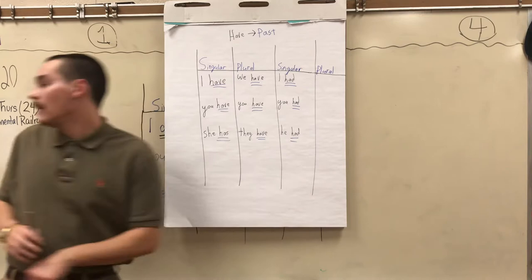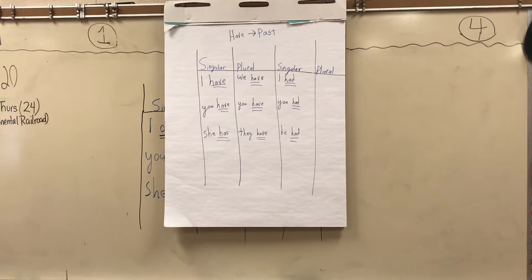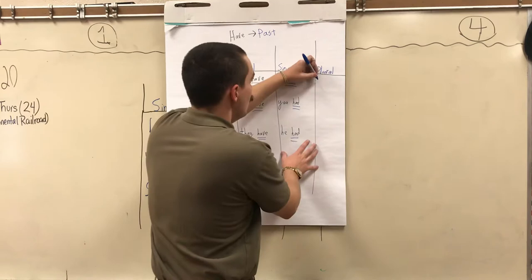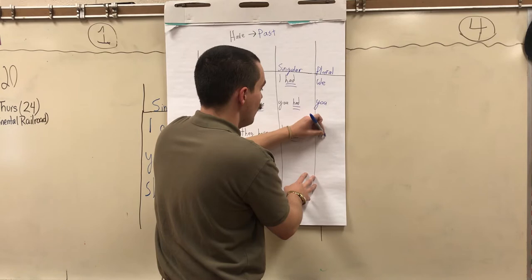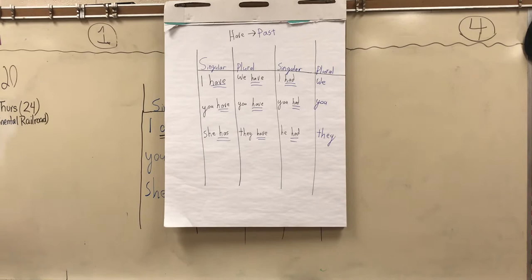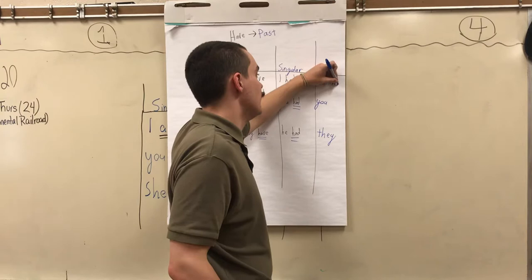Now, I'm going to fill this out the rest of the way. The last one we have, again, we, you, and they. I'll put this up here in a different color because it is our new one. We have we, you, and they. Had, because it is plural for the past, is going to be had all the way down the board.